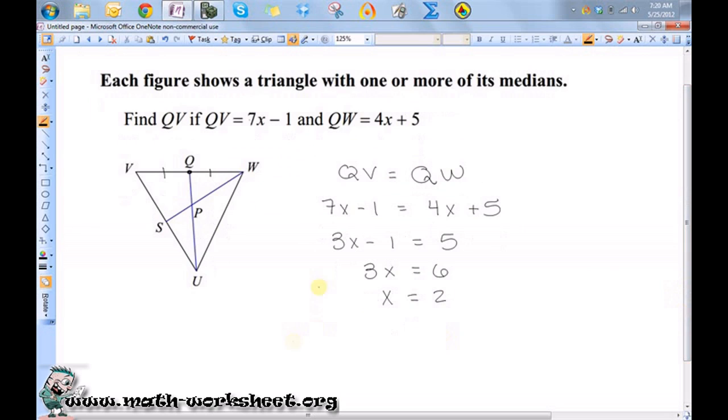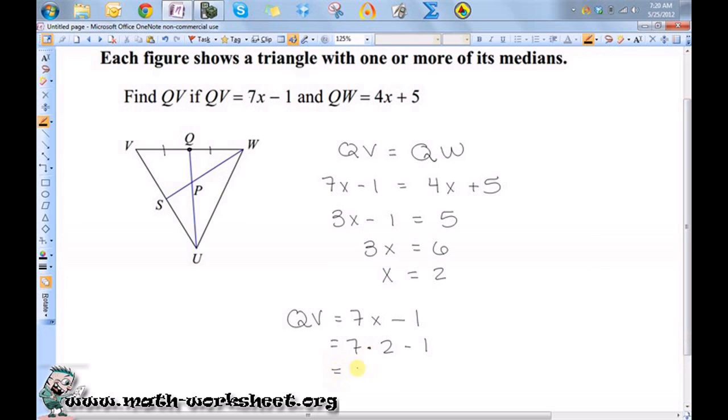Well, we said that QV was equal to 7X minus 1. Well, now I know what X is, so I just put the 2 in there. So that gives me 14 minus 1, or 13.